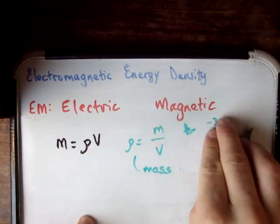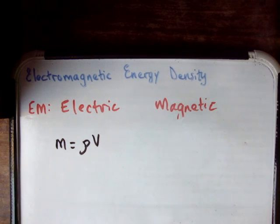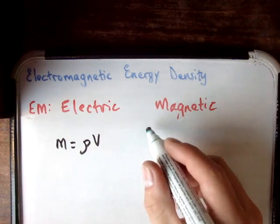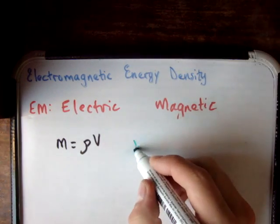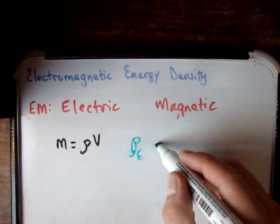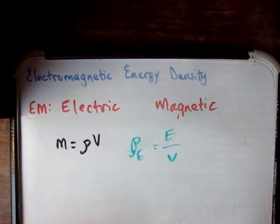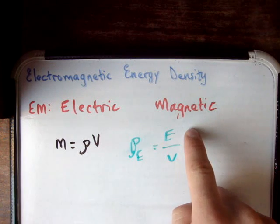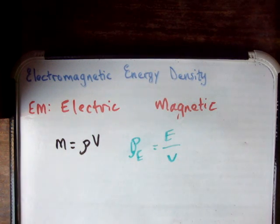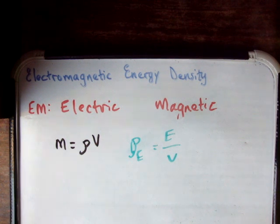So what about energy density? What would energy density mean? I'm going to write down something which is not exactly correct, but it gives you a feeling for it. ρ_e equals energy divided by volume — the energy density is the amount of energy in a unit volume. It's the same concept as mass density. This is just a way of analyzing electromagnetic fields and seeing how much energy you actually have.